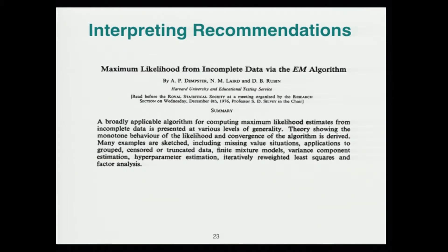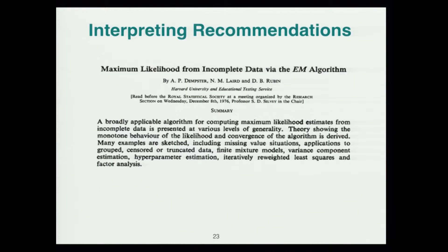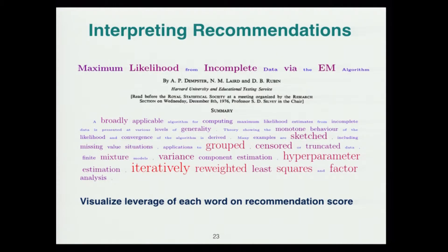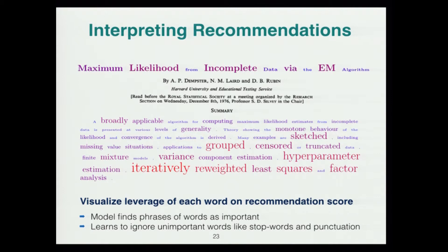Often people say deep learning models are black boxes, but this is not entirely true — there are simple methods to understand what models are learning. Given a paper being recommended to a user, you can take the derivative of the recommendation score and back-project it to each token's word embedding. The gradient norm at each token gives the leverage of that token in the final prediction score. When you visualize this, you find the model assigns importance to phrases — for example, 'maximum likelihood' and 'iteratively reweighted least squares.' The model assigns importance to words based on context; for example, 'likelihood' is less important than when it appears with 'maximum.' It also learns to uniformly downweight stop words and punctuation.